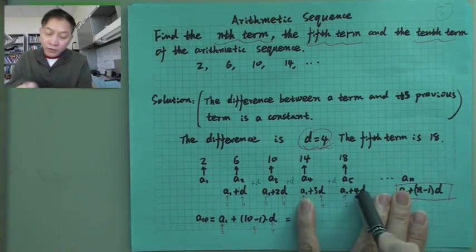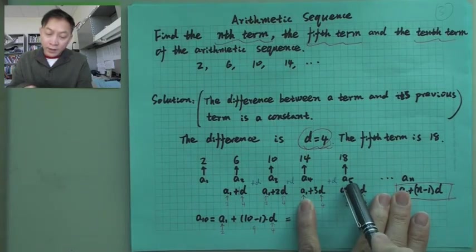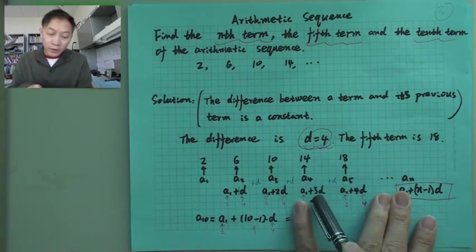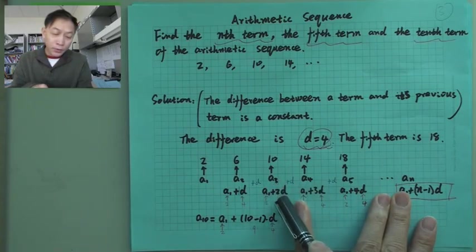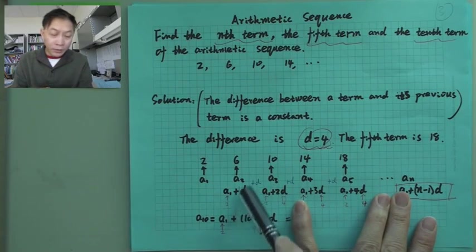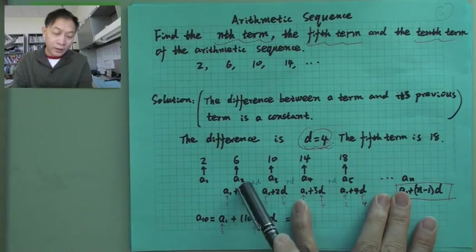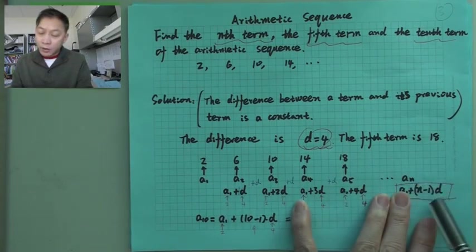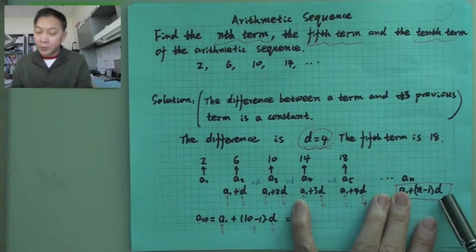So here will be the pattern. If here is N—A sub N—here should be N minus 1. This coefficient of D is always 1 less than this. 5, here is 4. 4, here is 3. 3, here is 2. And 2, here is 1. So for the nth term, here will be N minus 1 times D.